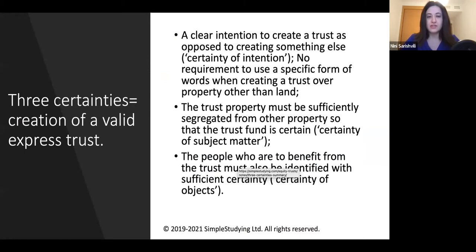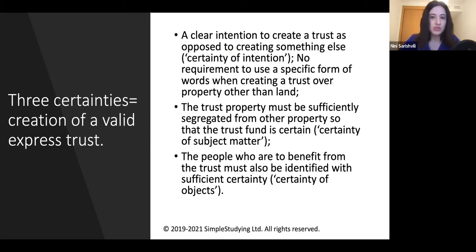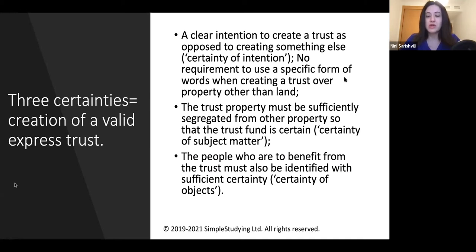The three certainties are the following: a clear intention to create a trust as opposed to creating something else — in other words, certainty of intention. It must be certain from the wording of the trust that the settlor intended to create a trust rather than something else, such as a mere power or a fiduciary power.